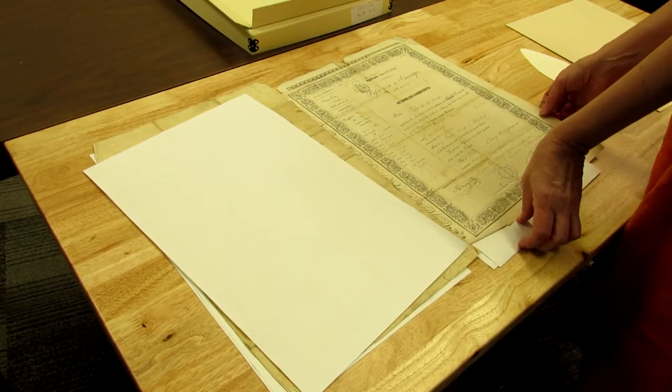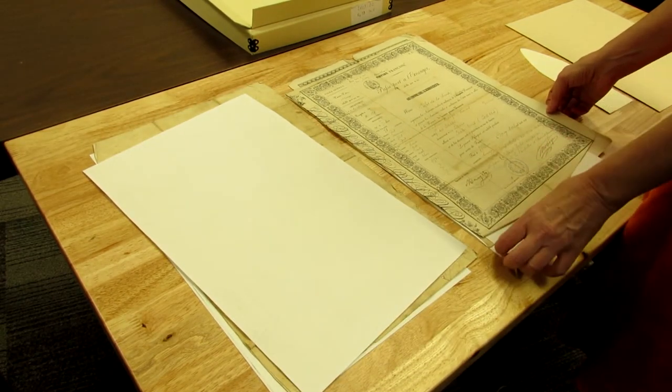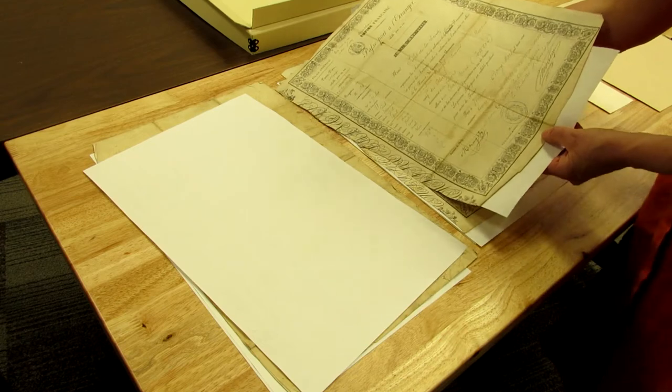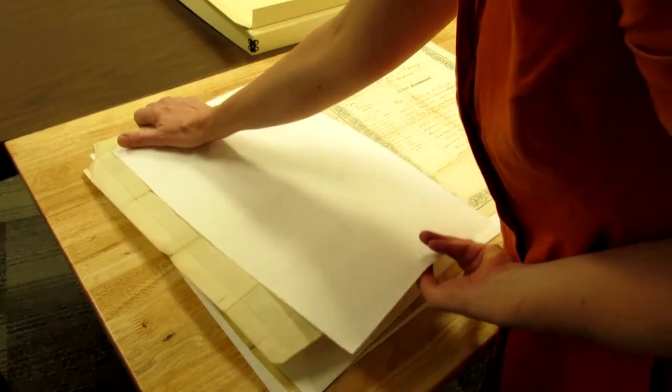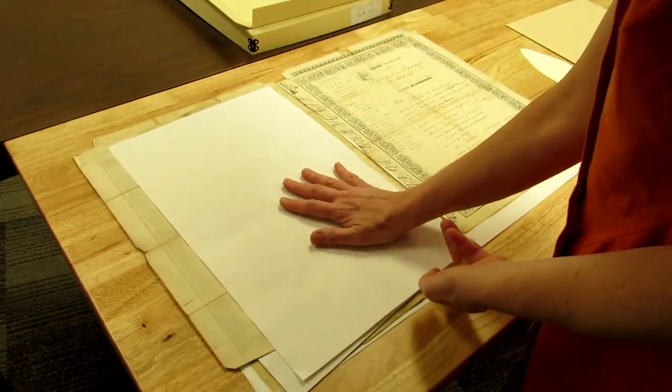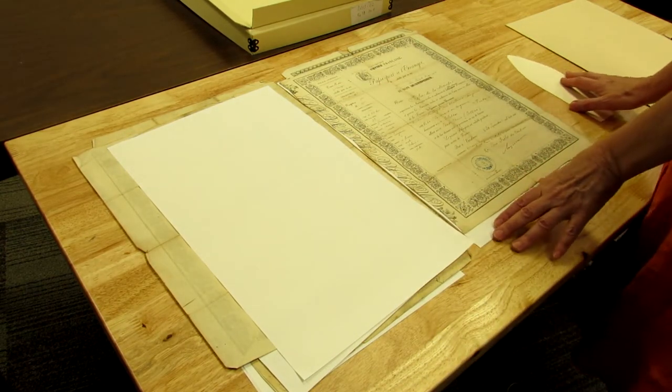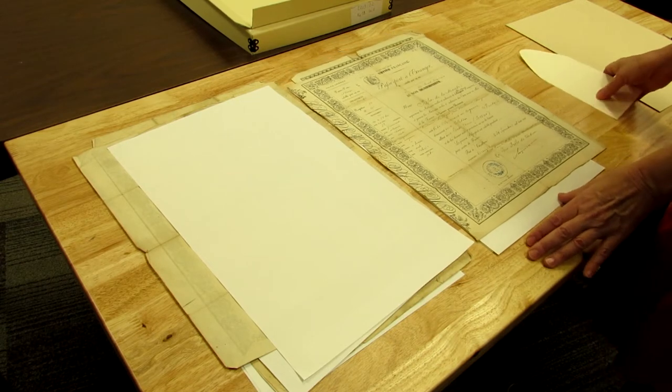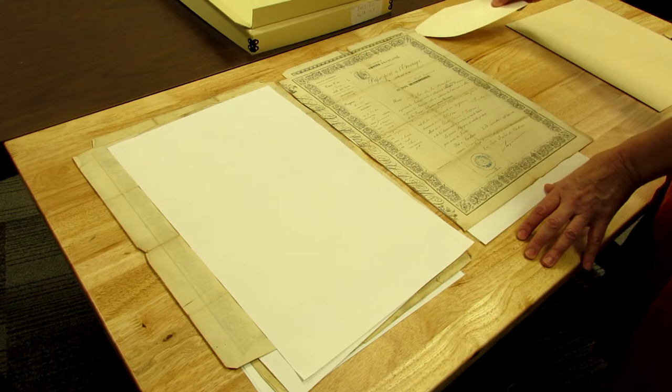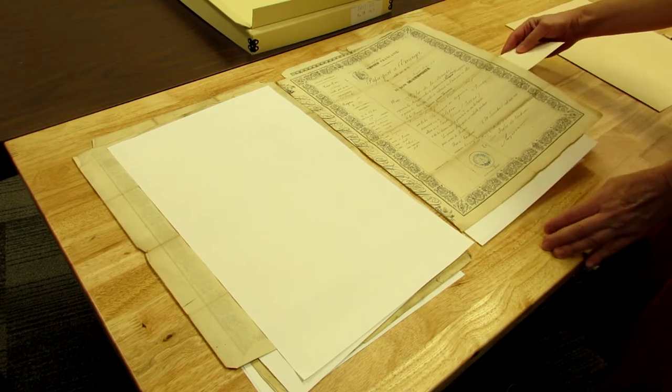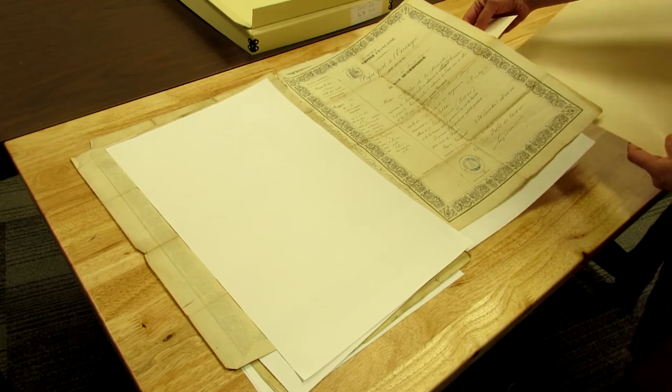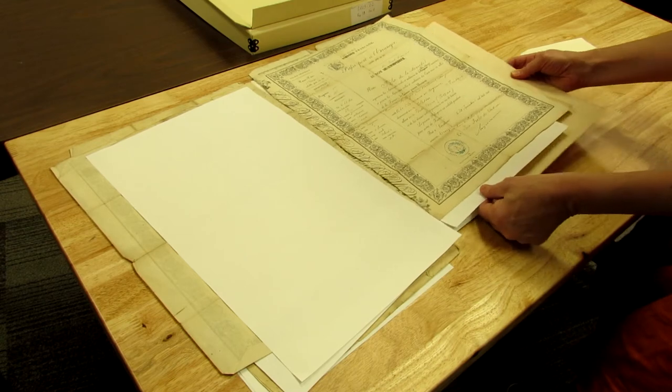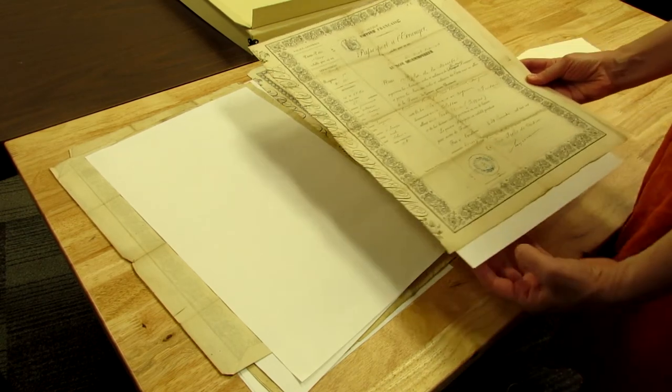You can use the backing sheets that we have in this box to help support the documents as you turn them over. Again, watch for vulnerable spots and use your paper tab and a support board if necessary.